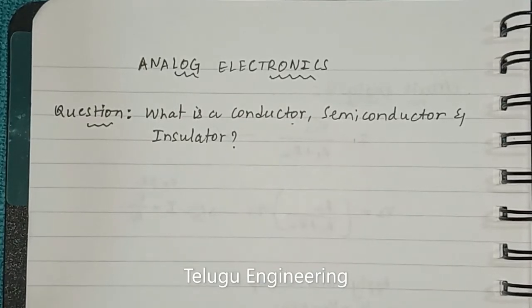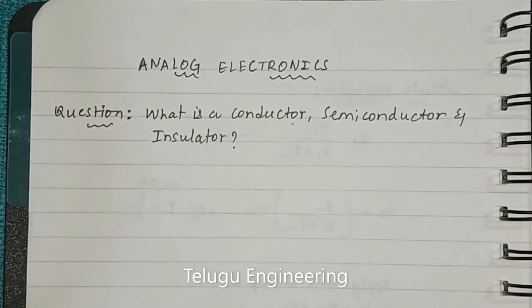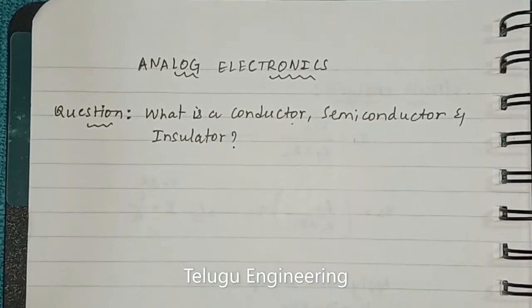While conductivity is the principal difference between conductors, semiconductors, and insulators, there are a number of other differences between the three. These differences may also need to be considered when thinking about their industrial and commercial uses.